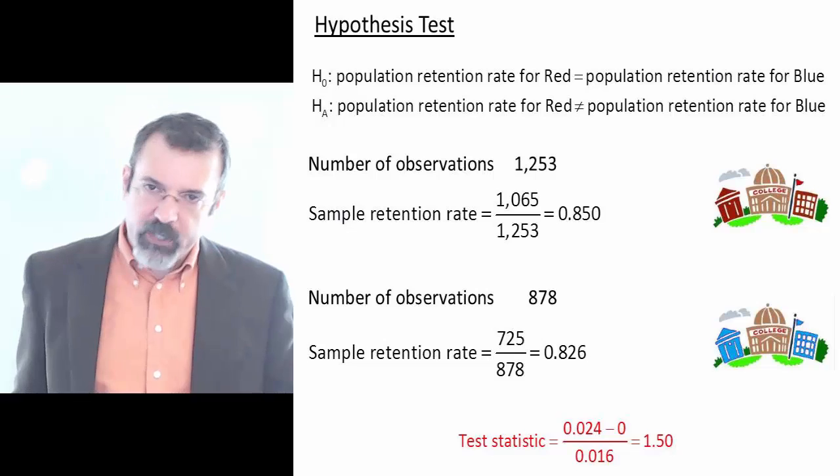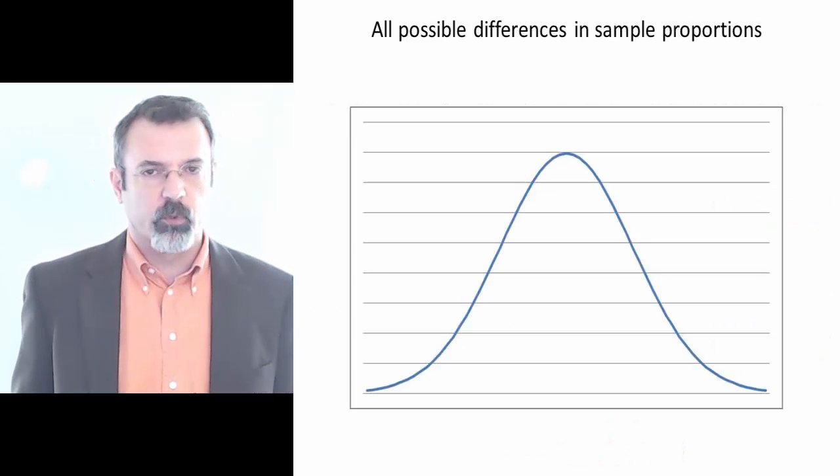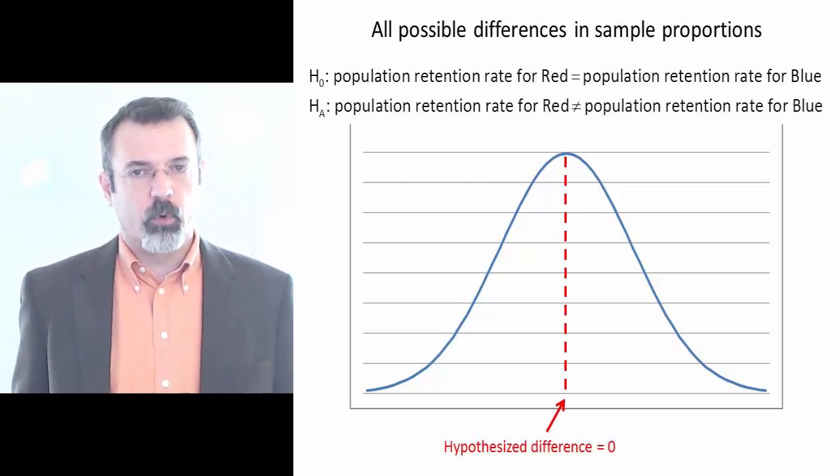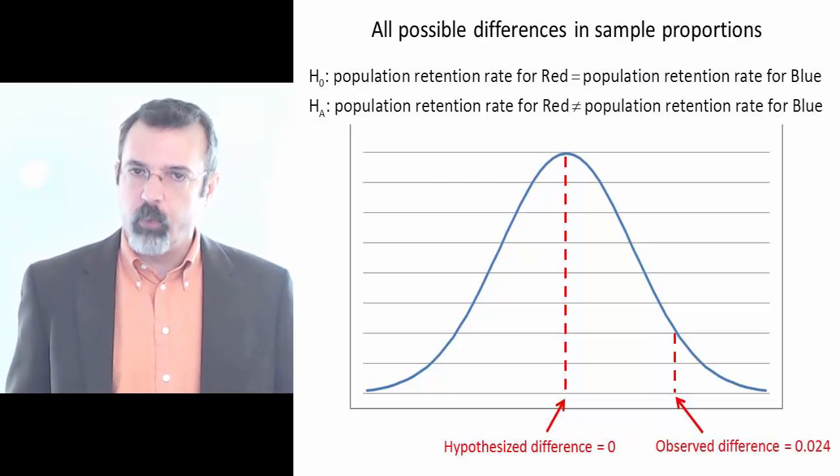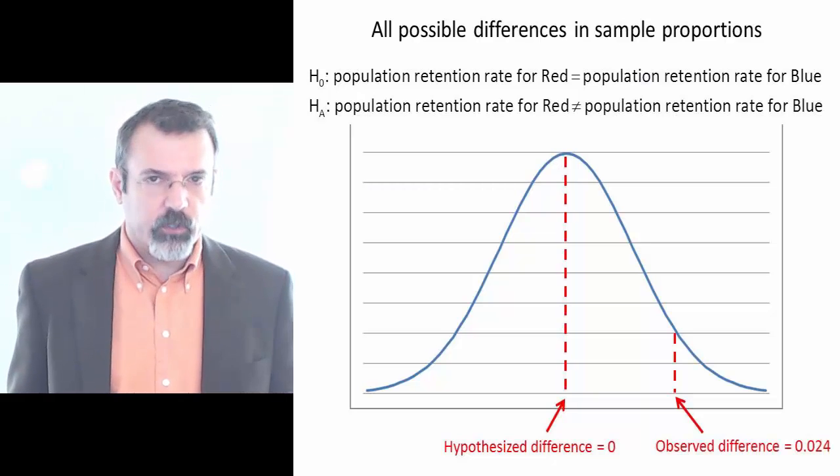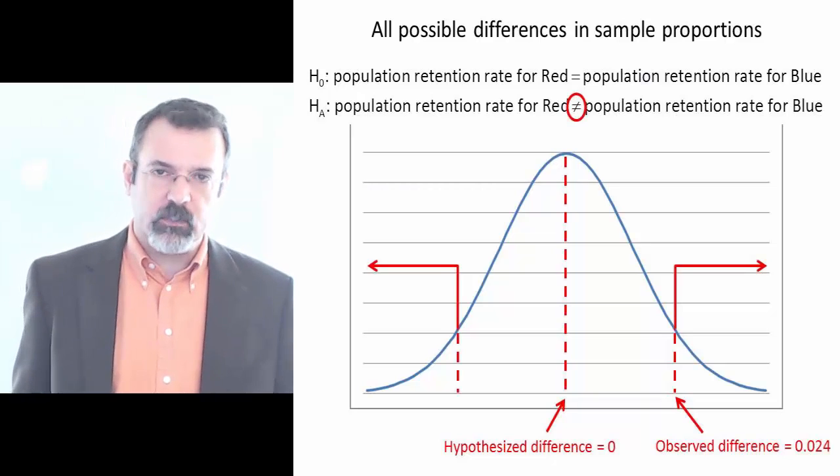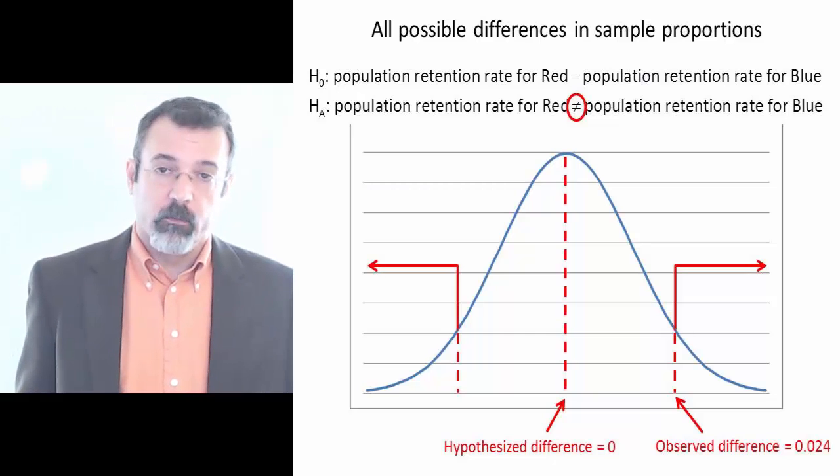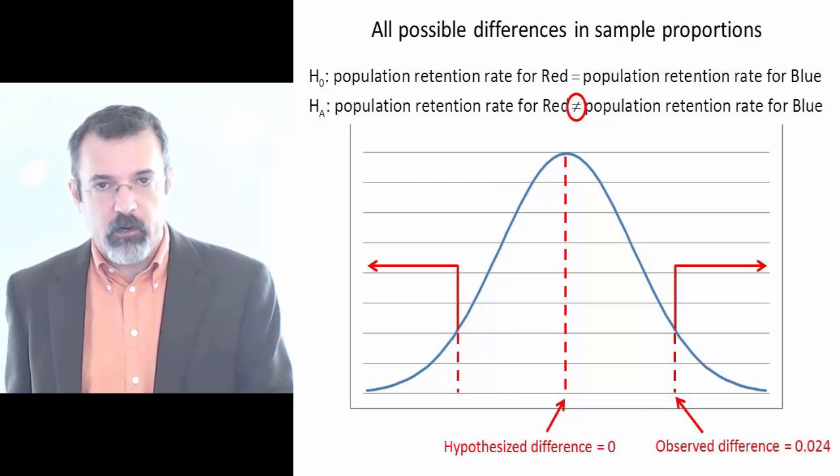So we now turn to a picture of all possible differences in sample proportions. We're hypothesizing that the difference in sample proportions is 0. What we actually observed was a difference of 0.024. Our alternative hypothesis is that the two proportions are not equal.